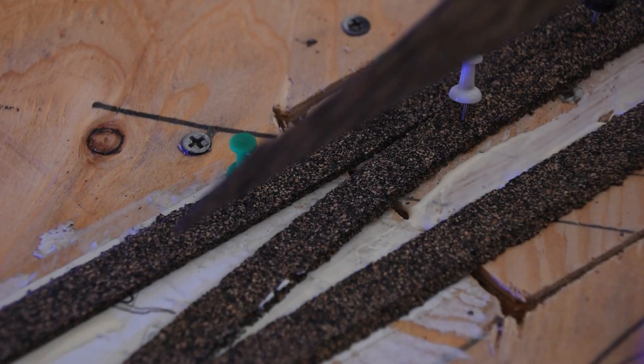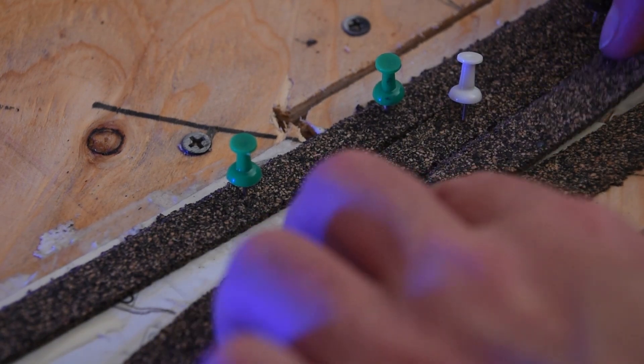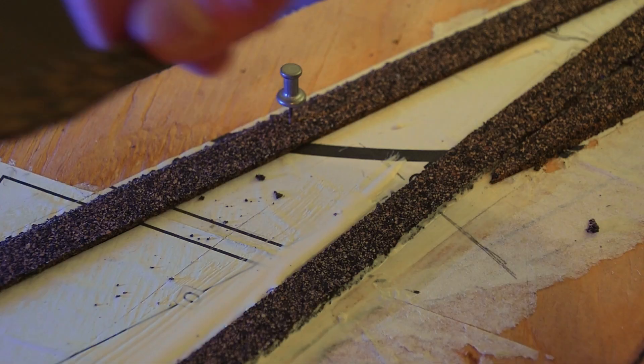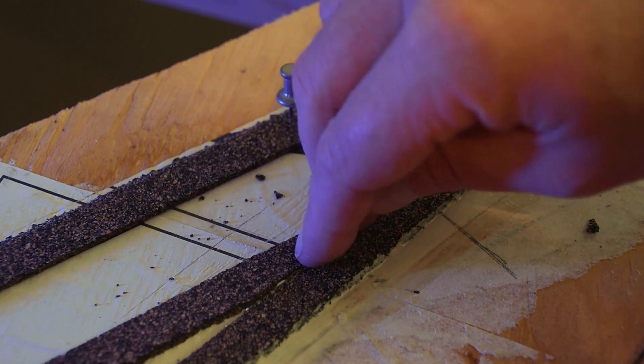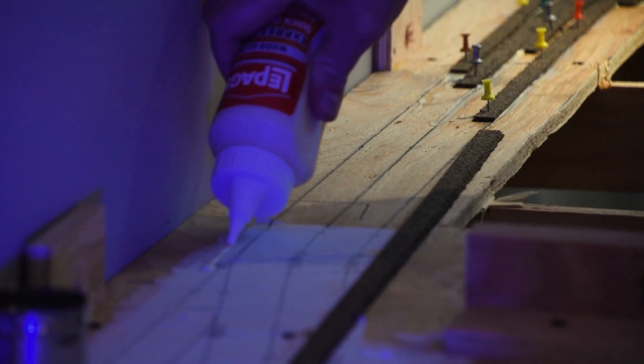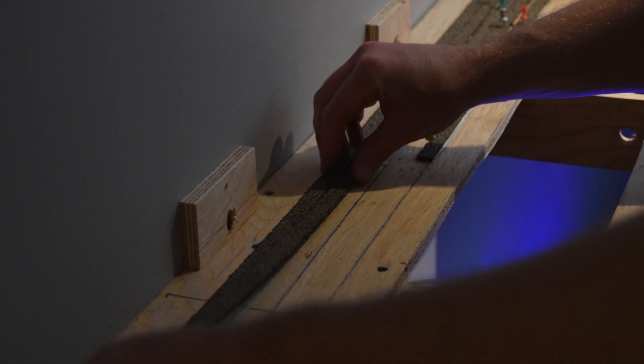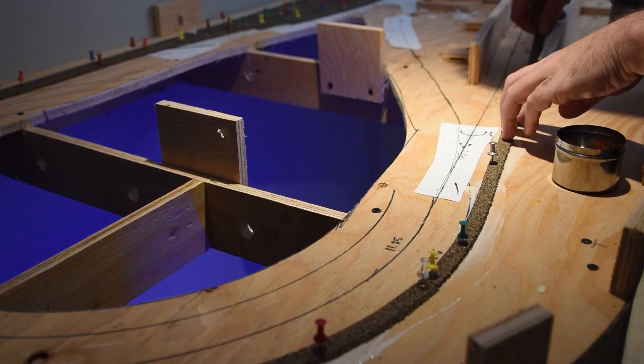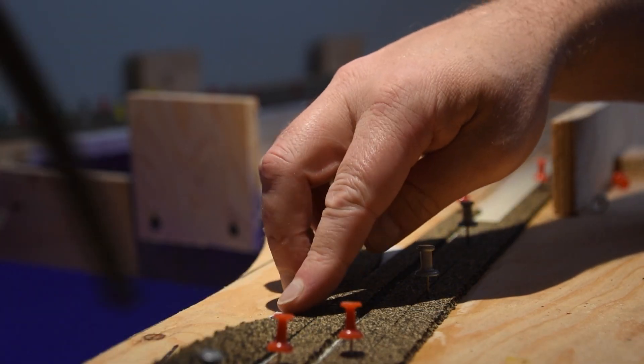Installation was straightforward. Each cork section was split and flipped to create beveled edges. I applied a generous coat of carpenter's glue along the center lines and clamped everything in place using pushpins. I installed the roadbed over the course of two weeks, stopping only when I ran out of pins.